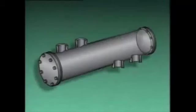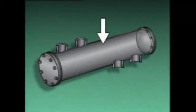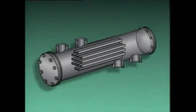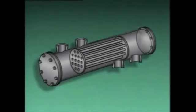As an operator, you may be required to operate many types of heat exchangers. Since shell and tube heat exchangers are one of the most common types of heat exchangers, you need to be familiar with their components and operation. We'll use this illustration of a shell and tube heat exchanger to explain how it works. The main components include a shell, a group of tubes called a tube bundle, tube sheets, and heads. The shell is the casing of the heat exchanger.